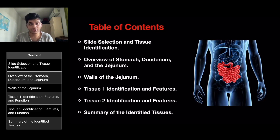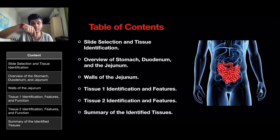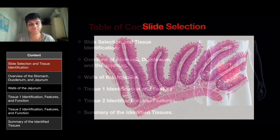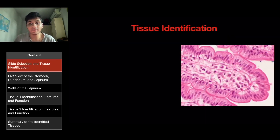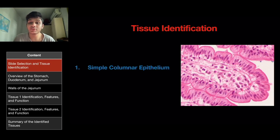This is my table of contents, and I've placed a table right below my webcam to follow through with my presentation. This is the slide I have chosen — a section from the human jejunum. The two tissues I'll be identifying today are simple columnar epithelium and loose connective tissue.